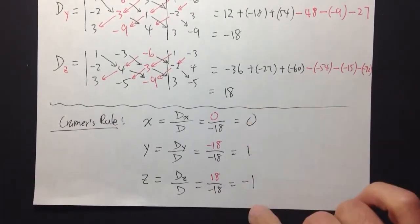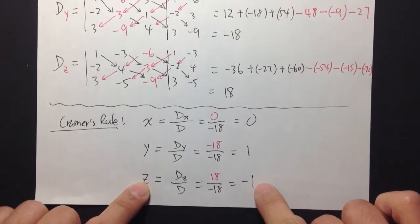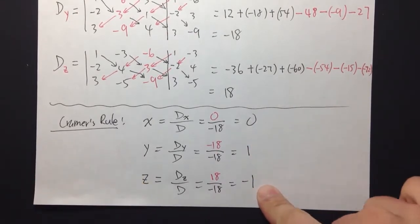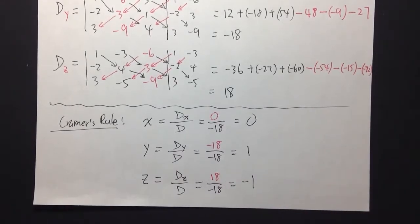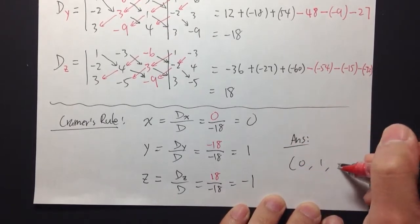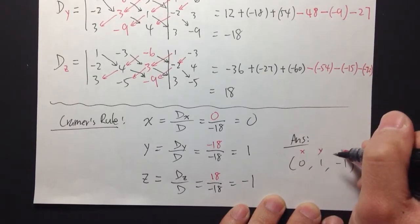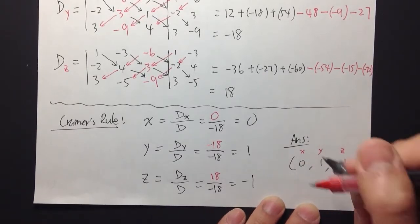And there you go. That's the answer. x is equal to 0, y is equal to 1, and z is equal to negative 1. This is exactly what we got earlier. You can also write your answer in the format (0, 1, -1). The first number stands for x, the second for y, and the third for z.